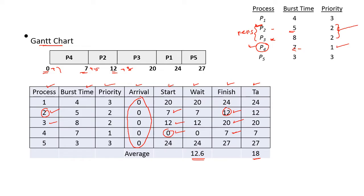Next, we go to priority 3, which is assigned to two processes P1 and P5. As per FCFS, P1 comes first in the ready queue, so P1 will execute first. The burst time is 4, so 20 plus 4 equals 24. The start time of P1 is 20 and the finish time is 24. Then P5 will get executed. The burst time of P5 is 3 and starting time is 24, so 24 plus 3 equals 27.